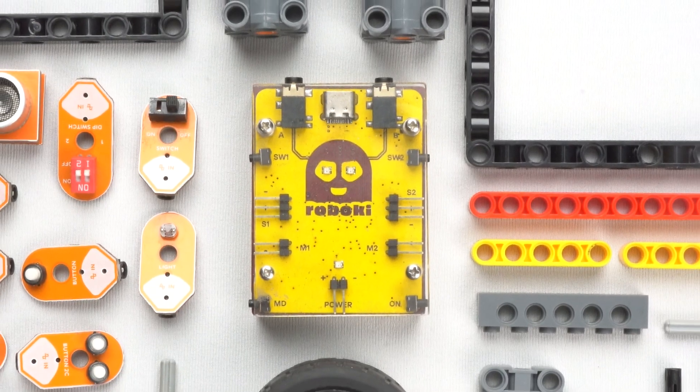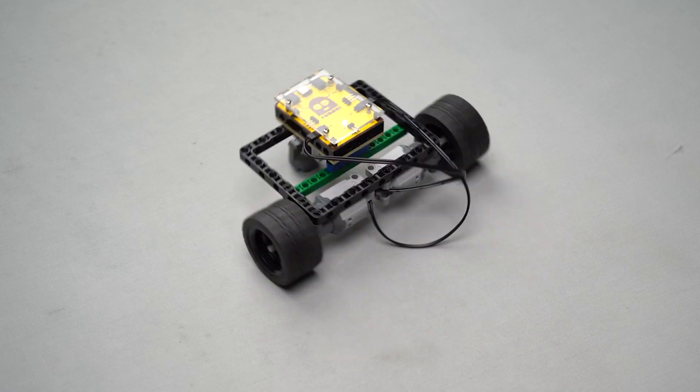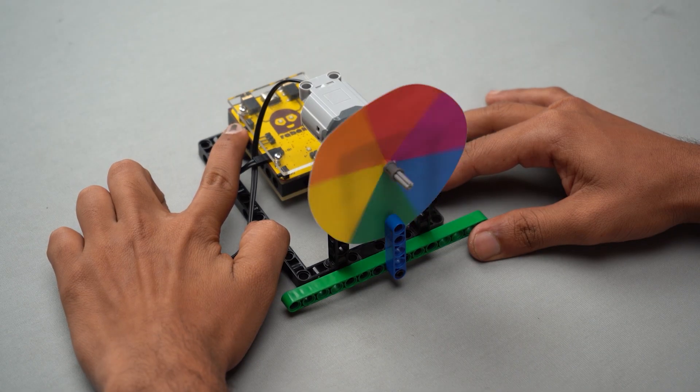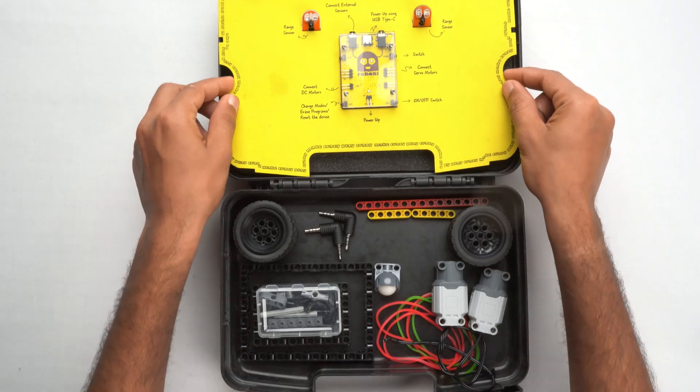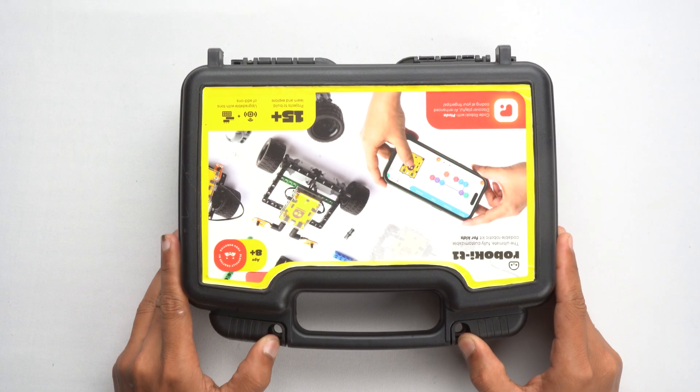With all these amazing components, you can let your creativity run wild. From building robots to smart devices, the RoboKey kit has everything you need to bring your ideas to life. So what are you waiting for? Let's start building and see what amazing things we can create together.